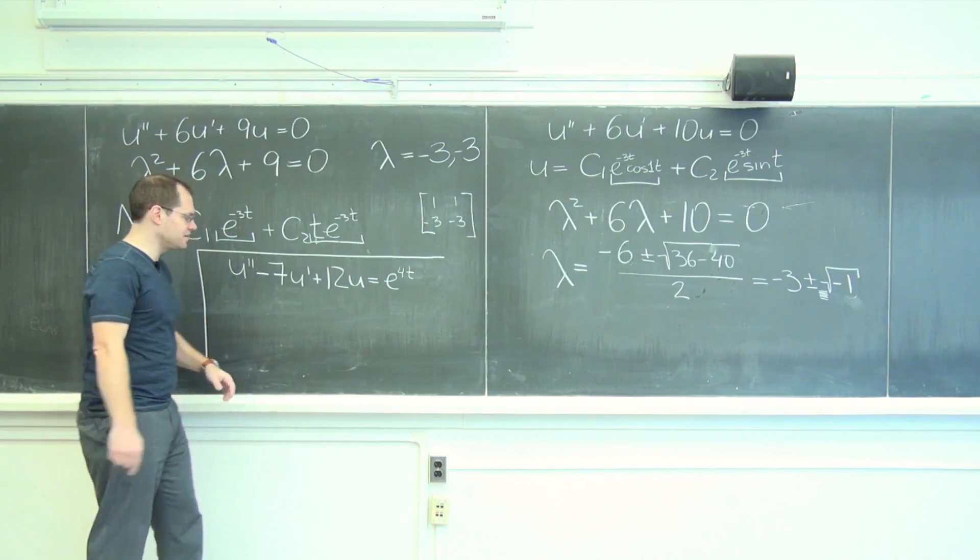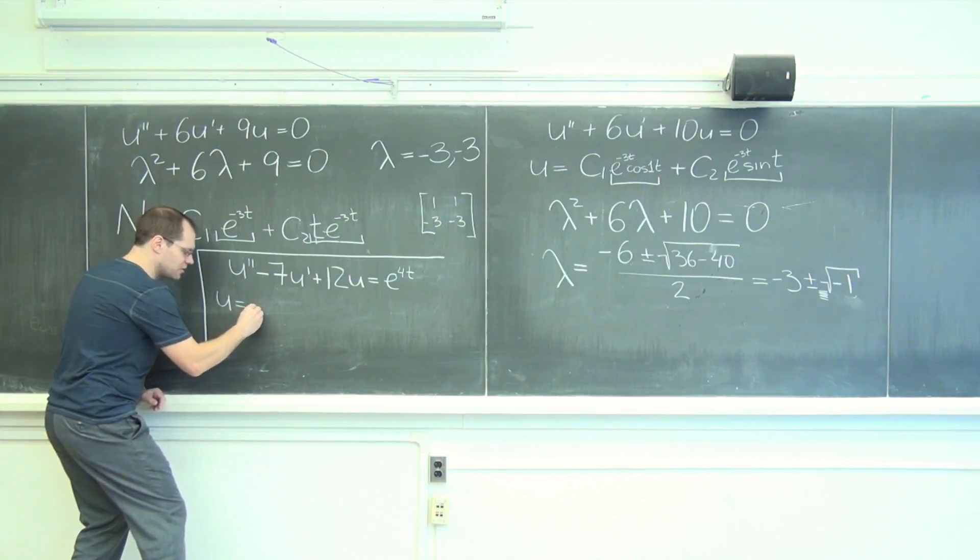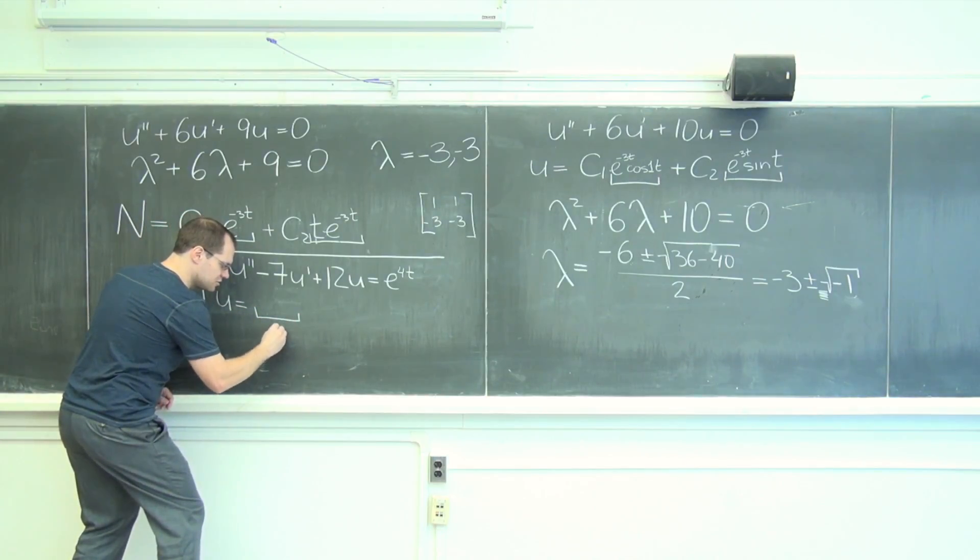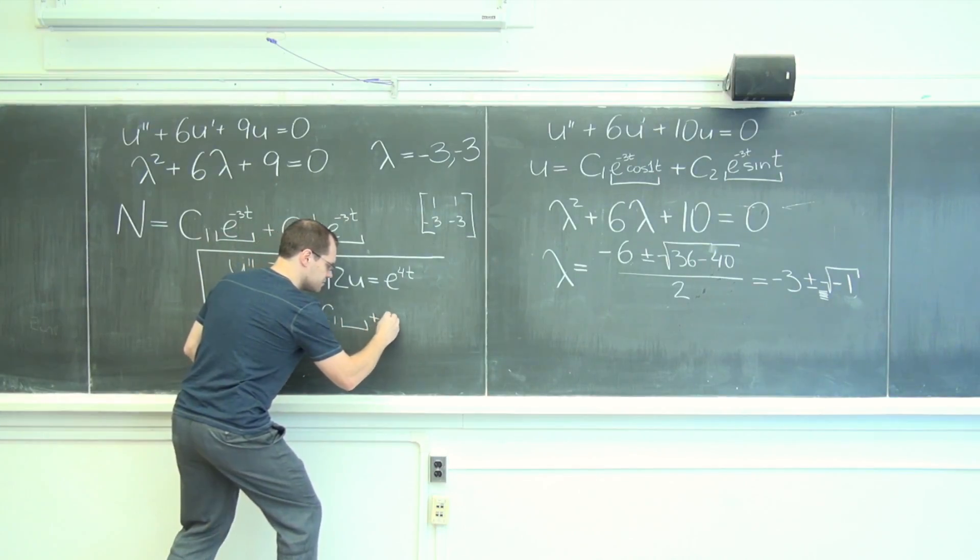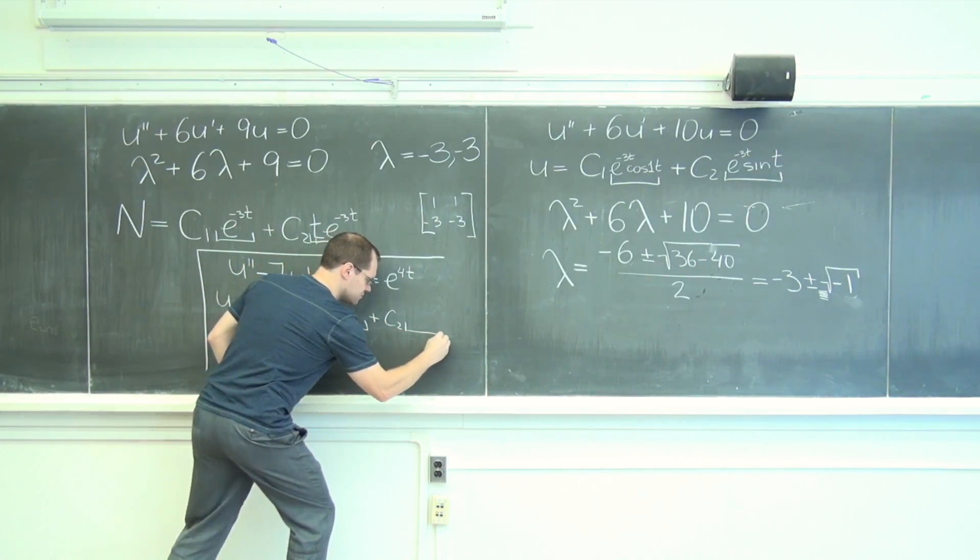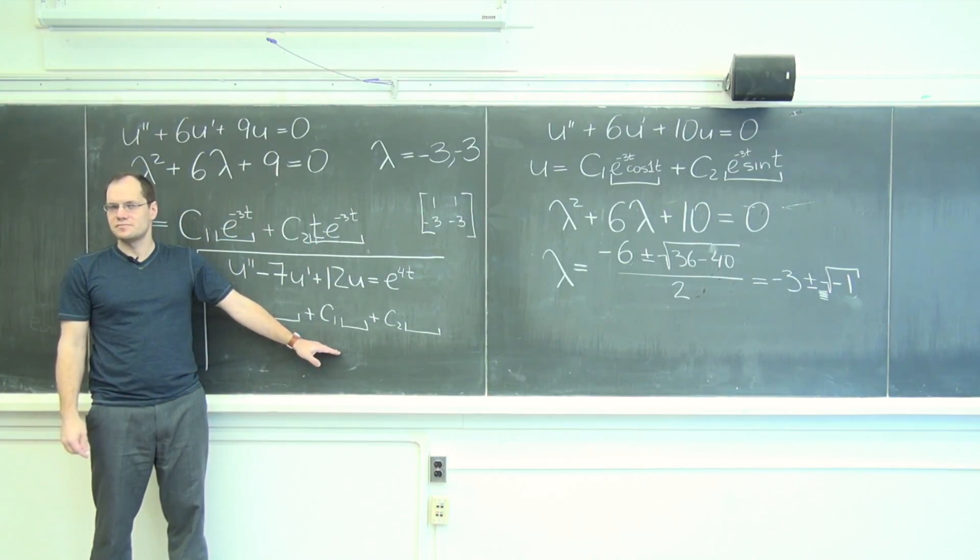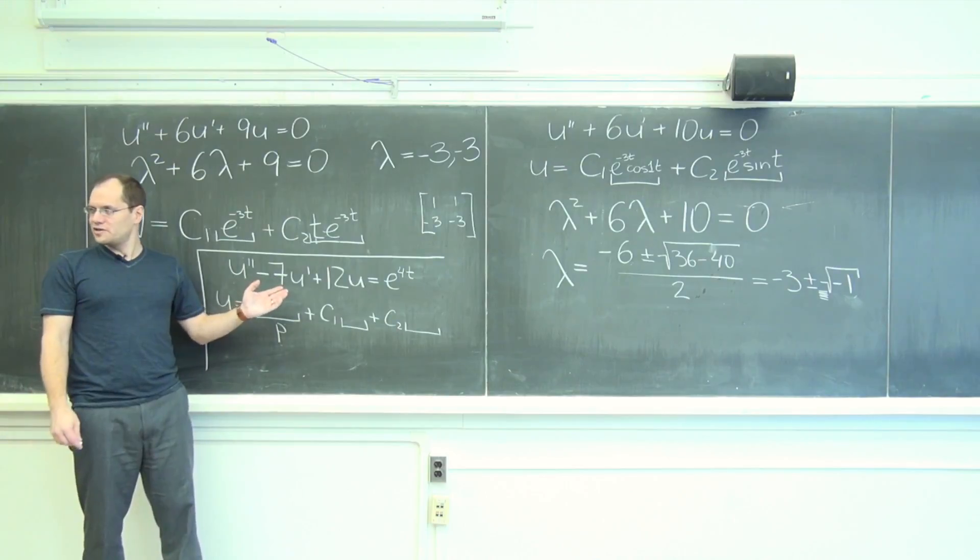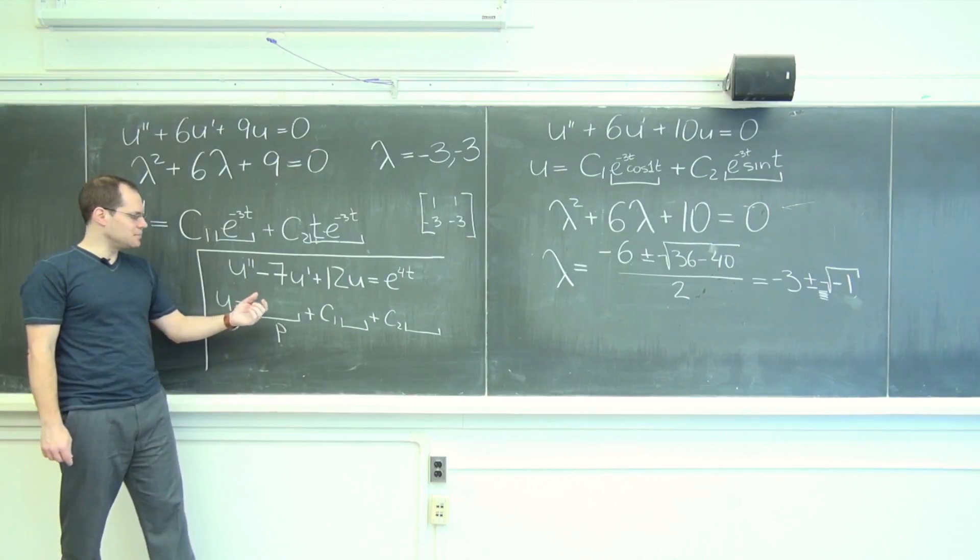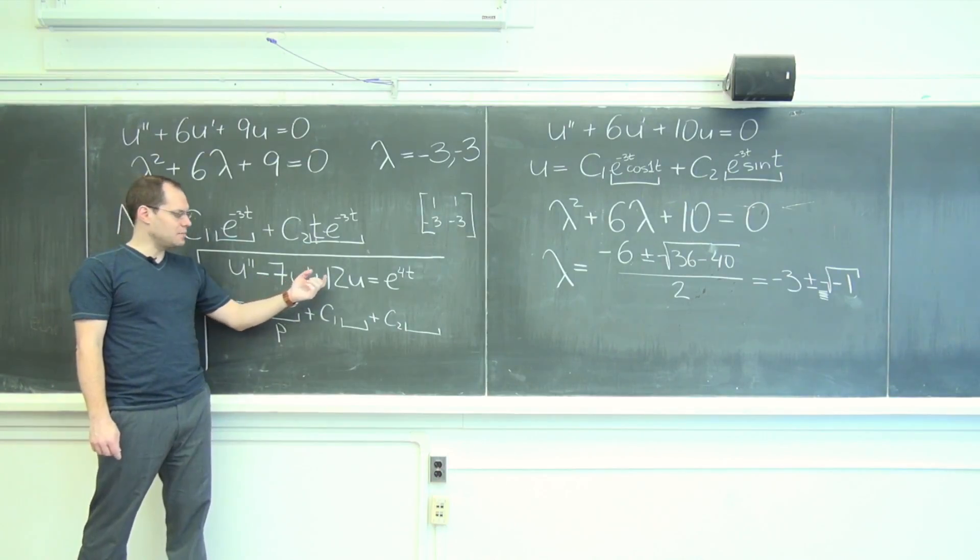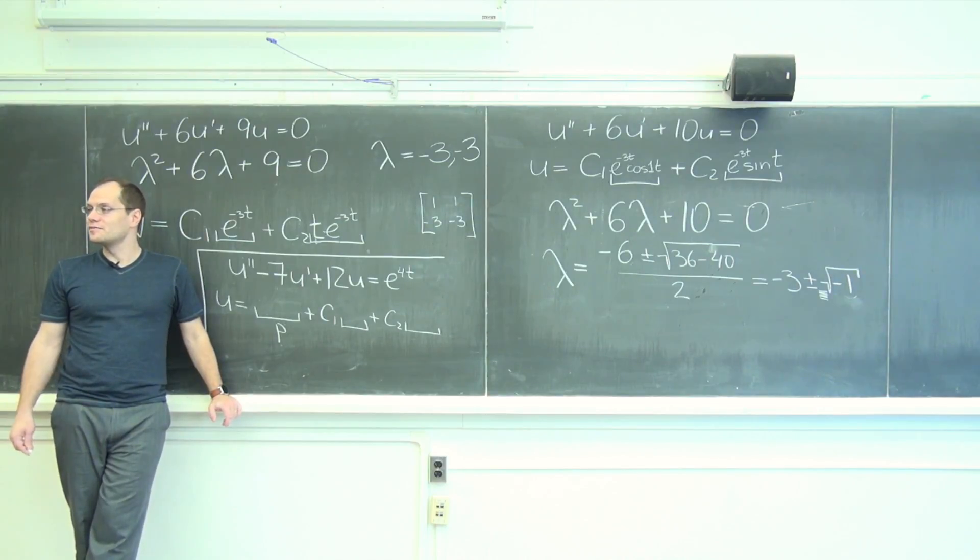Let's get there together. We know that the solution will have the form of a particular solution plus the null space. In this case, let's start with the null space. Can you think what the quadratic equation will be? I wouldn't even write it down. Can you think of two numbers whose sum is seven and product is twelve? Three and four, right.